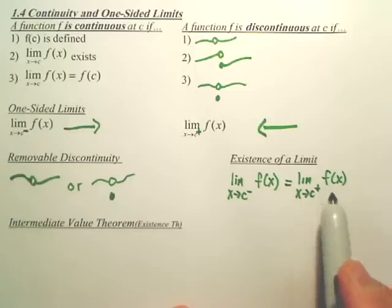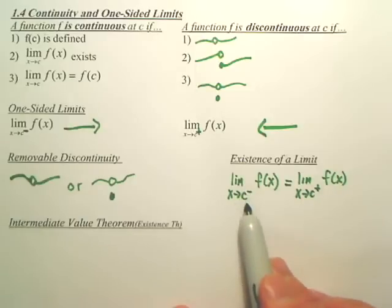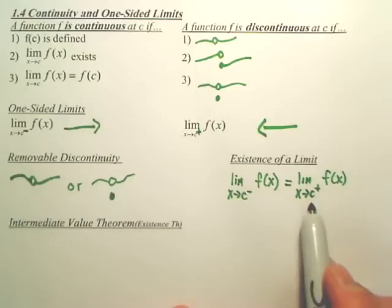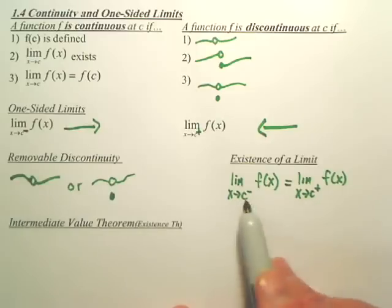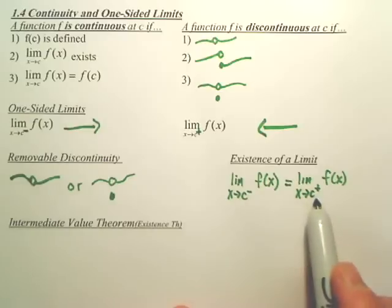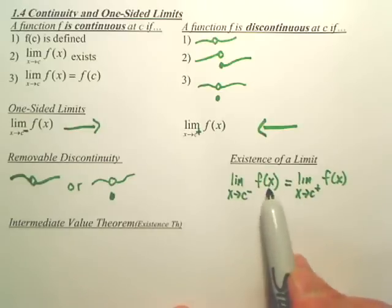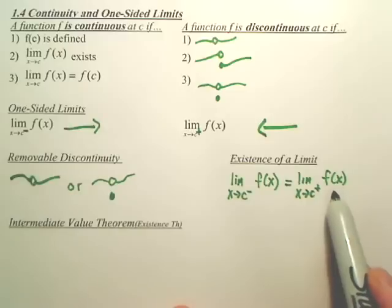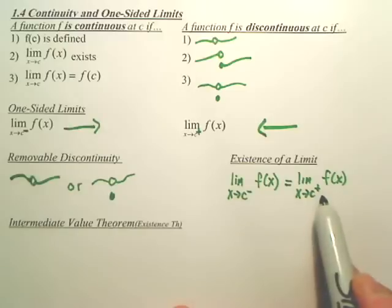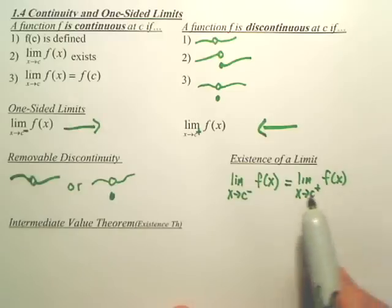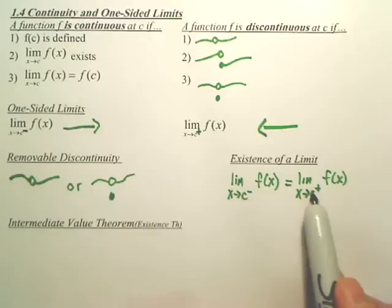A limit exists if the limit from the left is equal to the limit from the right. Basically, the definition of a limit is right there. A limit exists if the left and right side both agree and are equal. The book says it that this equals L and this equals L. I think that's stupid. Why don't you just say they're equal? So this is the definition of the existence of a limit. They merge and hit the same spot.